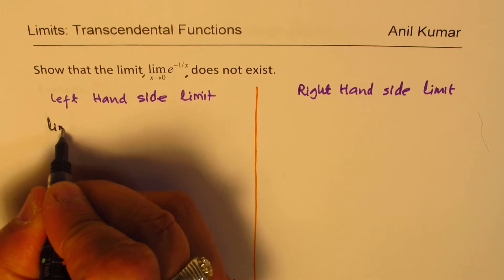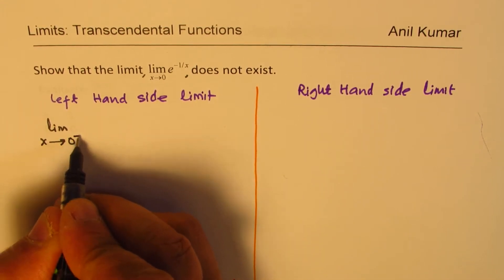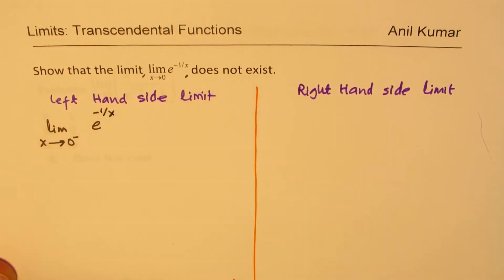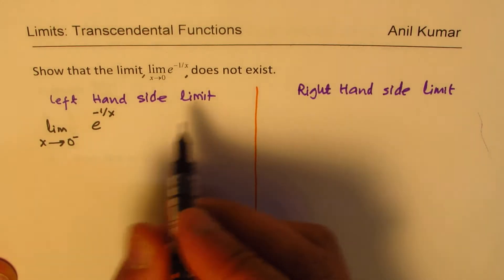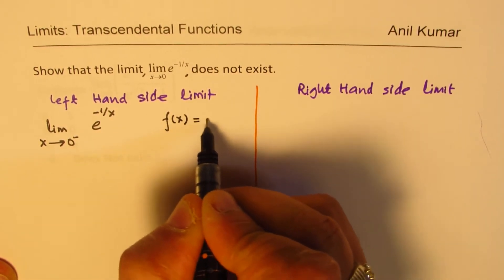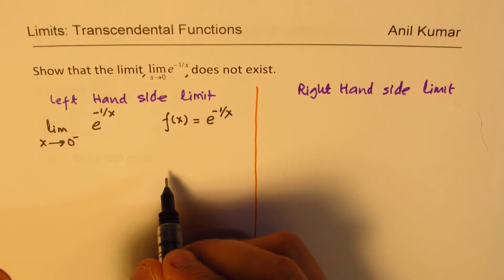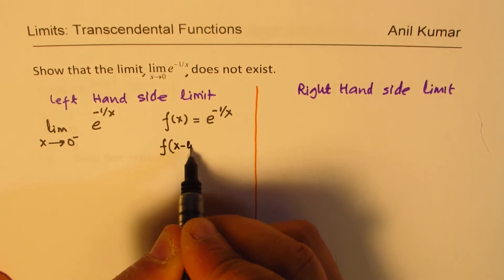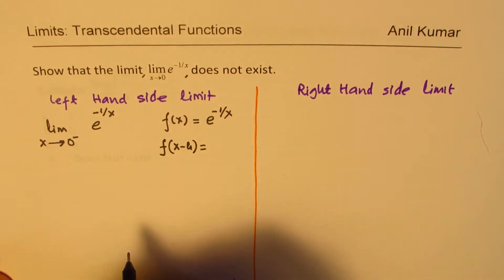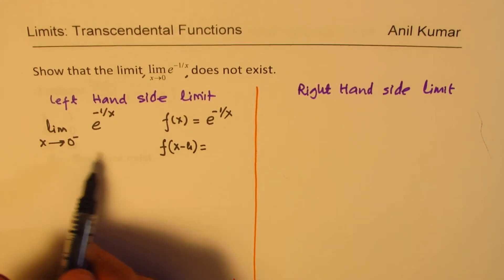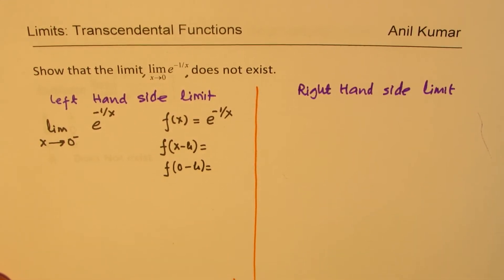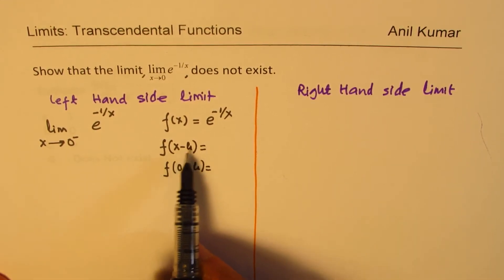When we say left-hand side, that means we are saying when x approaches 0 negative. That is the left-hand side, and the function is e to the power of minus 1 over x. Now, for this limit, let's say f of x is e to the power of minus 1 over x. When we are approaching from the left-hand side, what is f of x minus h? That is what we are interested in, especially when x is 0 — so what is f of 0 minus h?